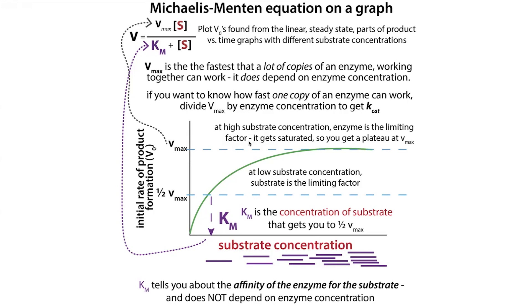How much velocity you end up getting — how much product you're forming — depends on a couple of things: how well you can bind the substrate (how quickly you can pick it up and how tightly you can hold it), and how well you can actually convert that substrate to a product.